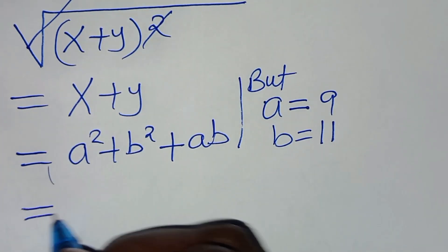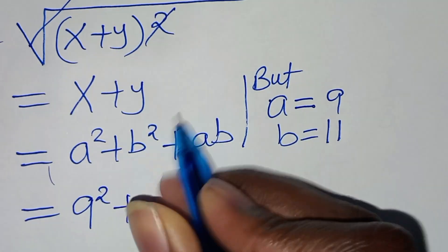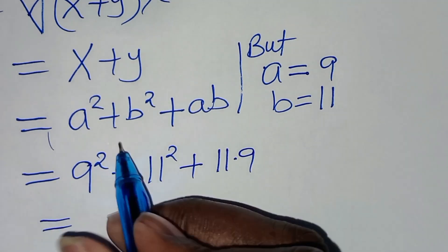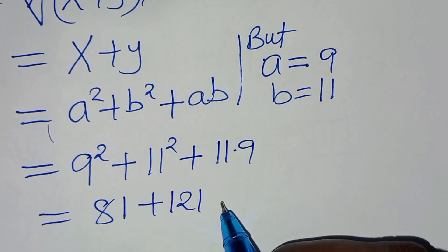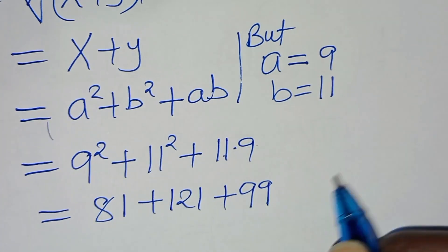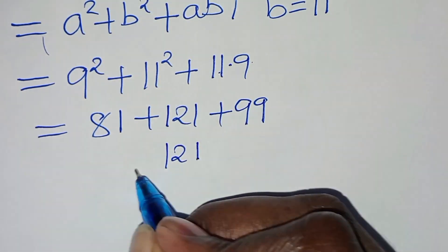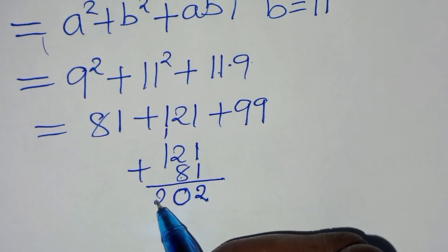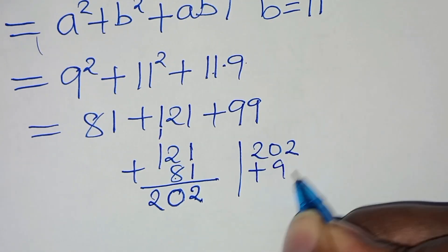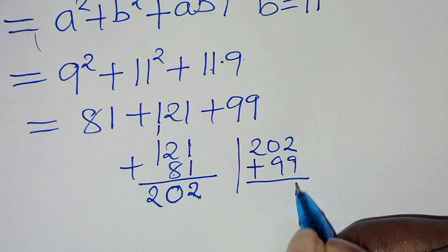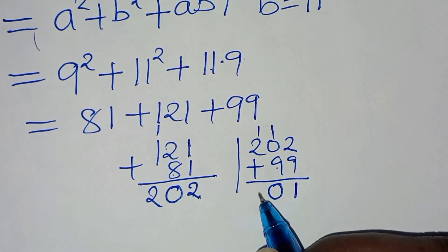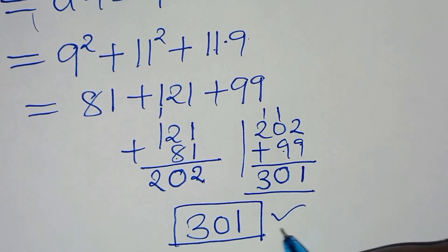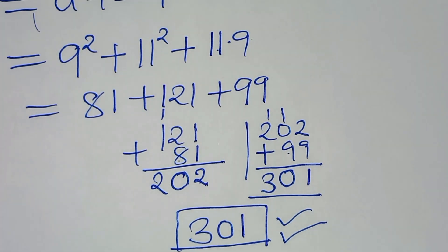Substituting a=9 and b=11: we have 9² plus 11² plus 11×9. That gives 81 plus 121 plus 99. Adding 81 and 121 gives 202, and 202 plus 99 equals 301. So the final solution to this square root math problem is 301.